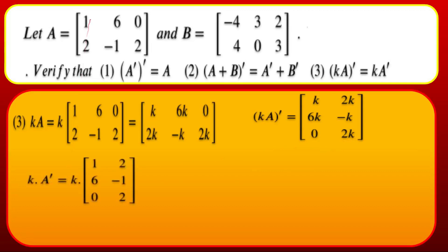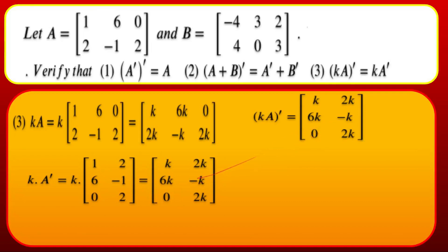For the third property: (kA)^T = k·A^T. Multiplying A^T by scalar k gives k times each element — k, 2k, 6k, −k, 0, 2k — which is the same as k·A^T. So (kA)^T = k·A^T is verified.